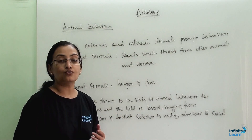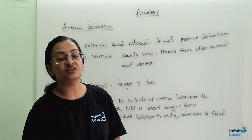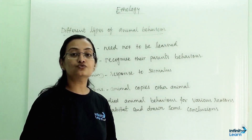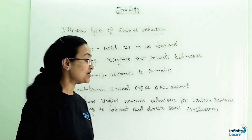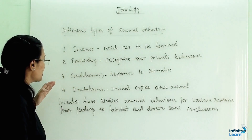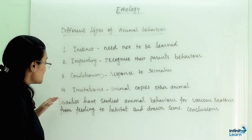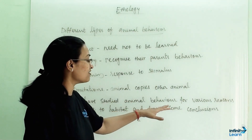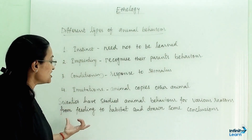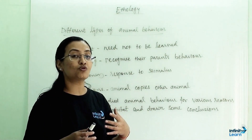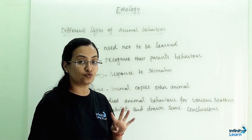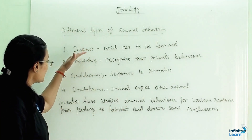Now we are going to study four different types of animal behavior. In this video we are going to learn four basic animal behaviors and they are instinct, imprinting, conditioning and imitation. Scientists have studied animal behavior for various reasons and drawn some conclusions, and based on that we are going to learn these four behaviors.